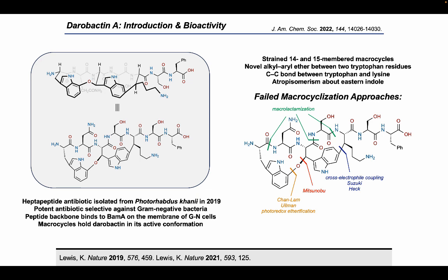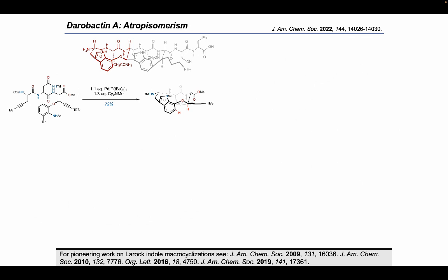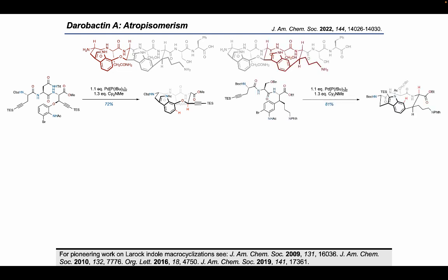In early model systems, we examined several reactions including amide bond formation, etherification, the Mitsunobu reaction, or carbon-carbon bond formation as the step to close either the eastern or western macrocycle. While these reactions worked on linear systems, they were unable to overcome the energetic barrier required to close the strained macrocycles. From these model studies, it was determined that pre-organization was required to close these rings. Turning to precedent from the Boger and Reisman groups, we attempted to close the rings through a LORAC-indole synthesis reaction. Working on the western macrocycle in isolation, the ring-closing event proceeded in 72% yield with the desired stereochemistry as supported by NOE between the highlighted protons.